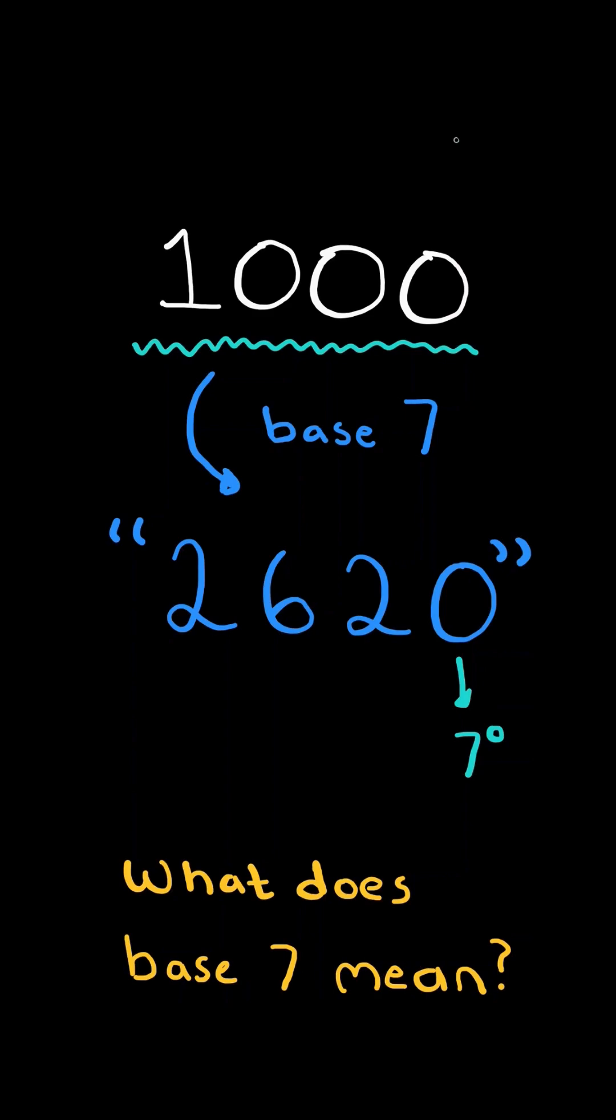For example, the rightmost digit is 7 to the power of 0, the next one is 7 to the power of 1, and so on.